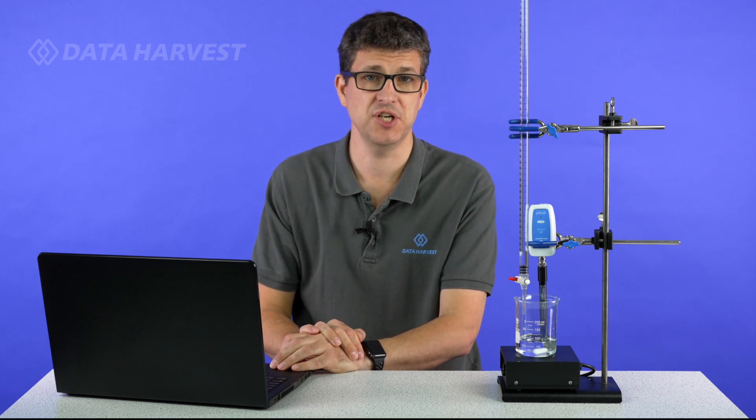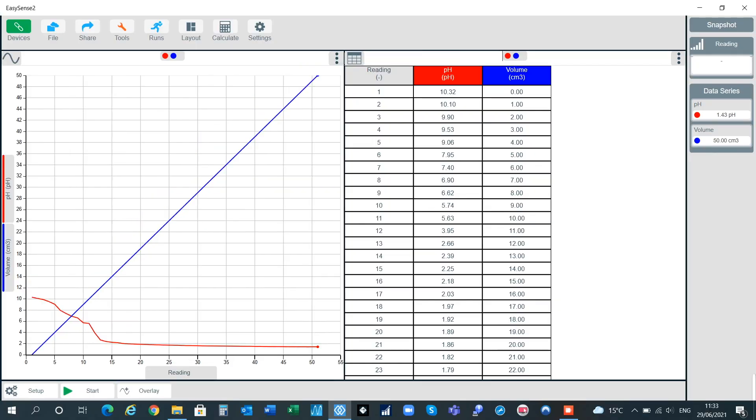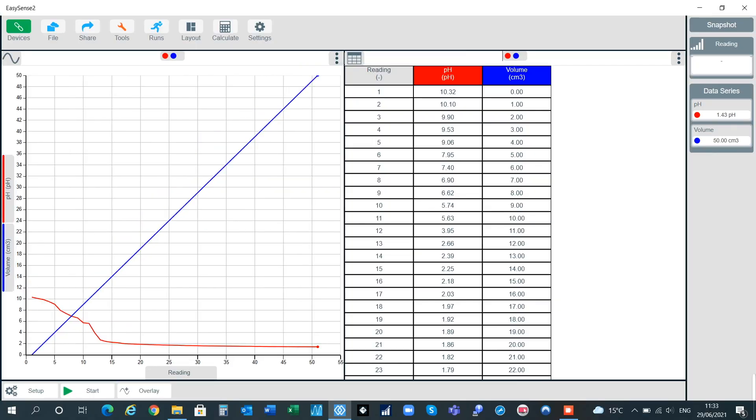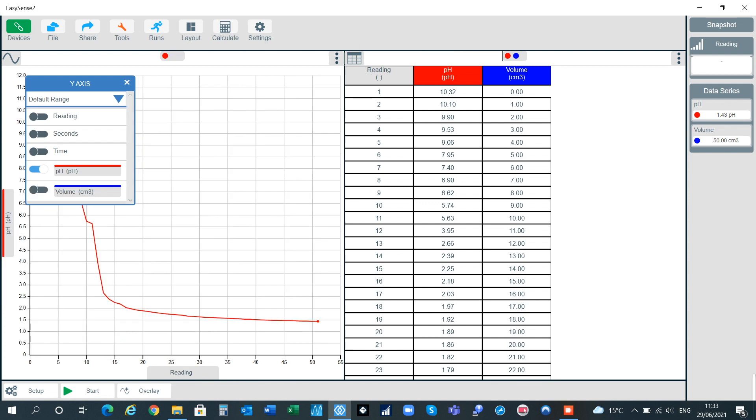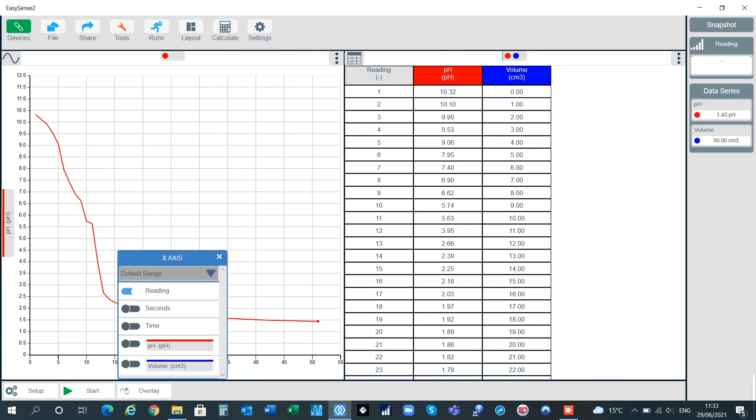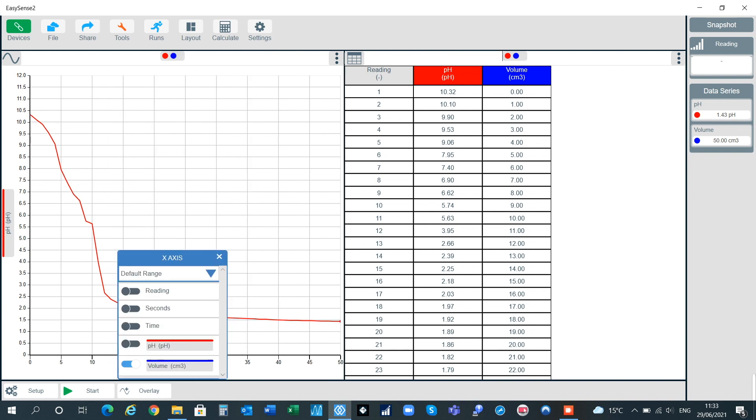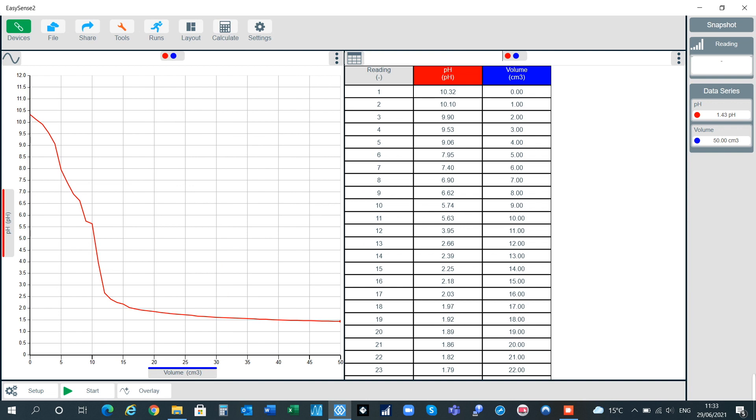So it's as simple as that to actually do the experiment. You can now play around with a graph and show what you want to show. Now the really good thing, we're going to click the stop button on here now. So we can change this to only show pH on there. And on the bottom we can show volume. So we can show pH against volume. And you want to show it that way. It's as easy as that.